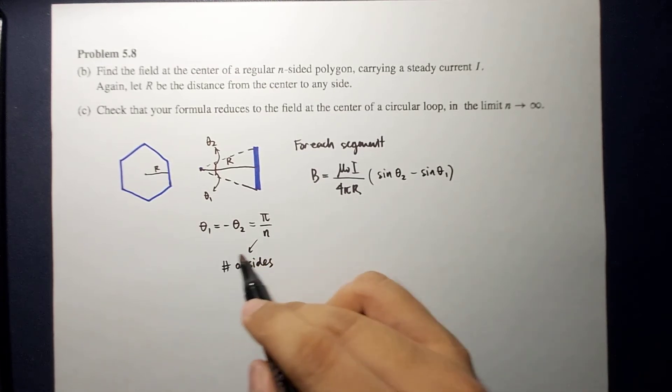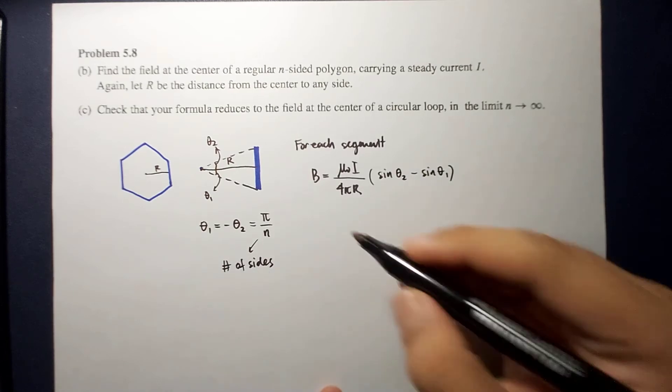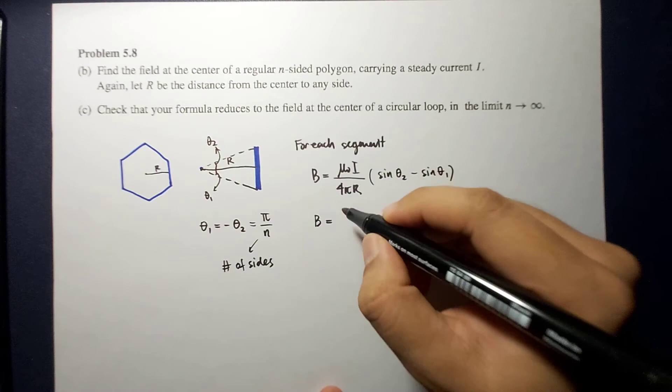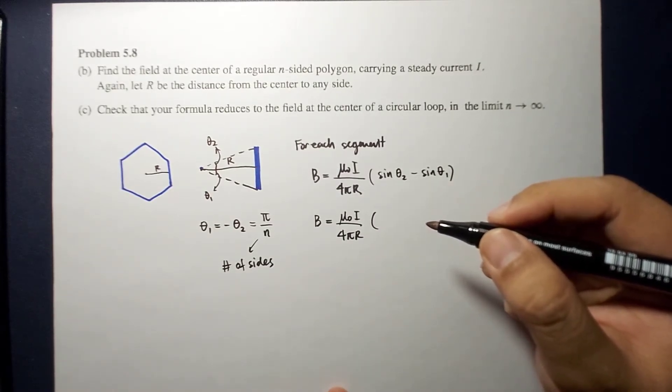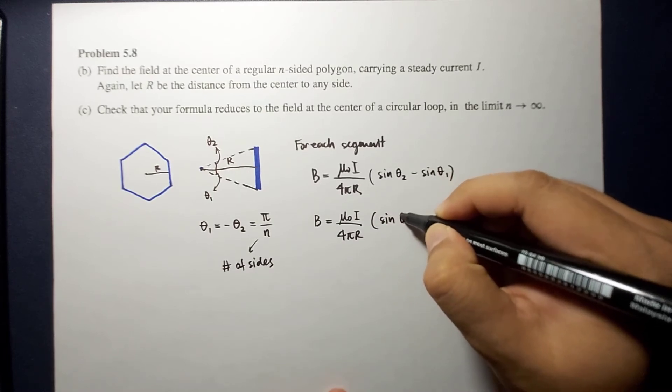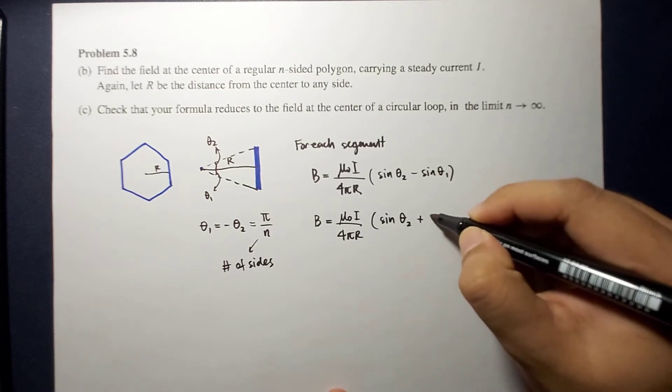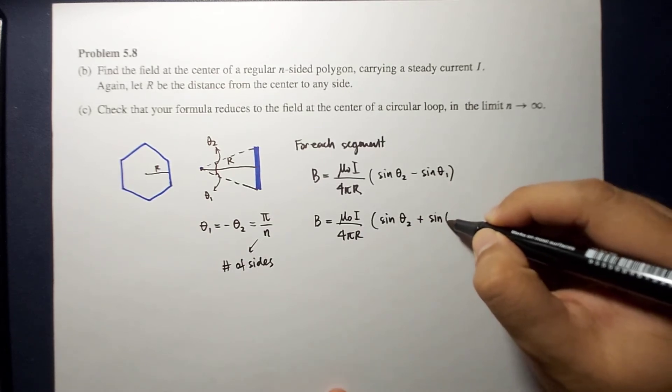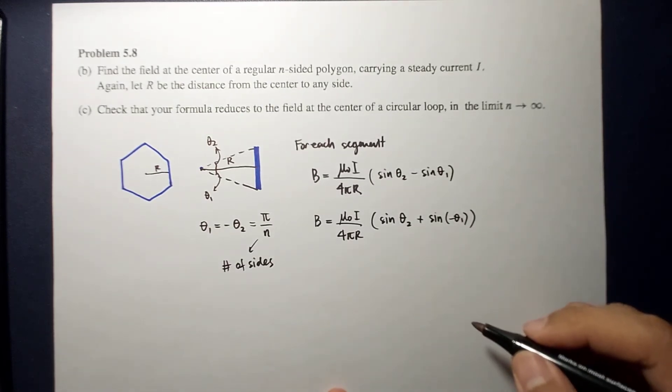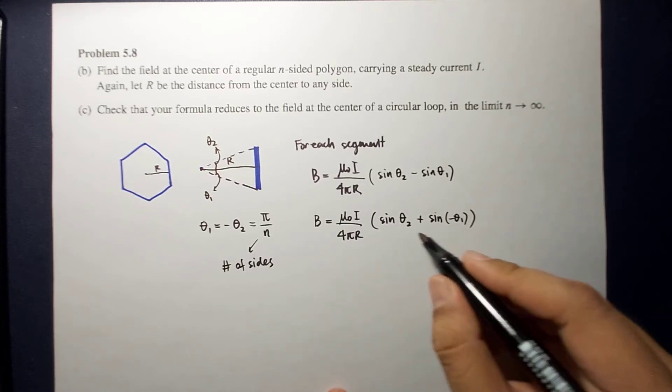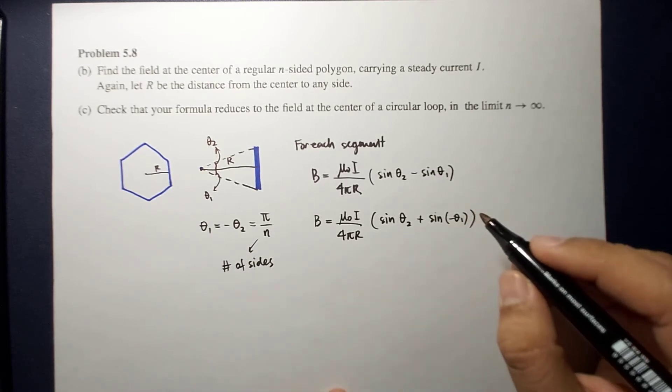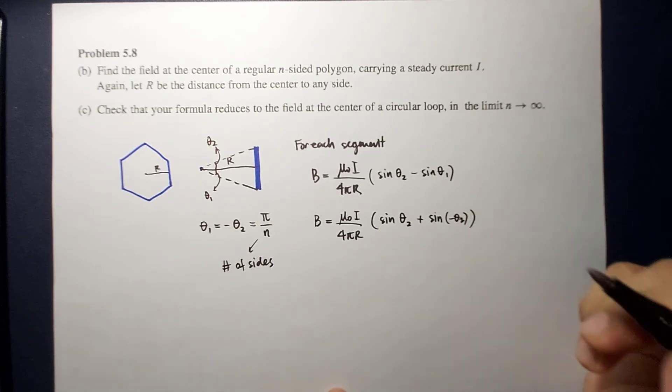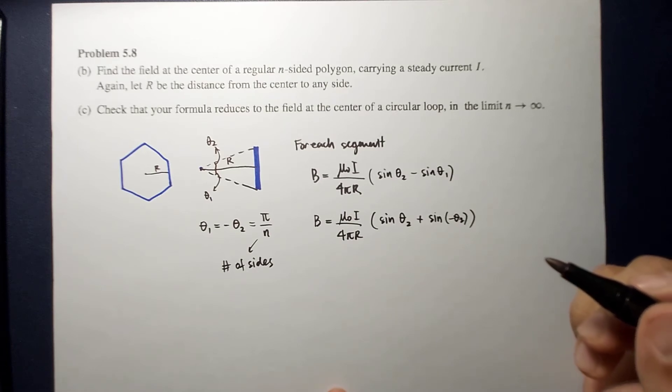So using this relationship between theta 1 and theta 2, we can now rewrite this magnetic field at the center to be equal to mu naught I over 4 pi r times sine theta 2 plus sine negative theta 1. So this is equal to 2 sine theta 2.